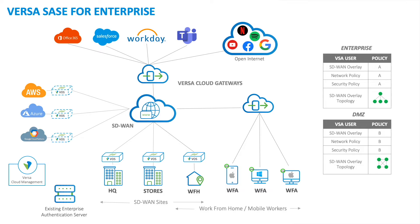For example, you may want one overlay for your enterprise network and a completely separate overlay for the DMZ. Each overlay has its own discrete network policy, security policy, SD-WAN overlay, and security keys. This allows us to keep these two networks as air-gapped as possible across the wide area network.